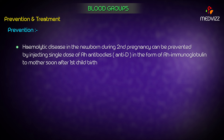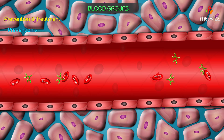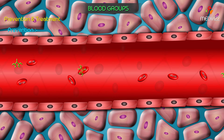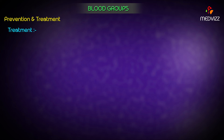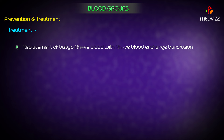Prevention of hemolytic disease of the newborn: A single dose of Rh immunoglobulin (Rh antibodies) is injected to the mother soon after childbirth. These antibodies destroy the Rh positive fetal RBCs that have entered maternal circulation, preventing the mother from forming active antibodies. Treatment of hemolytic disease of the newborn is exchange transfusion — replacing the baby's Rh positive blood with Rh negative blood.